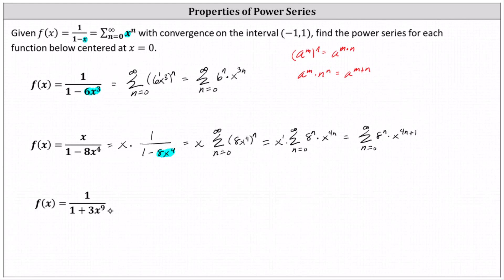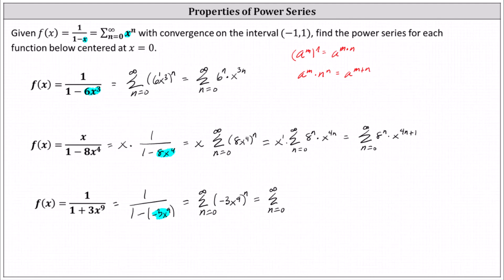For the last example, notice we have a sum in the denominator, not a difference, but we have to have a difference. Therefore we'll write one plus three x to the ninth as one minus negative three x to the ninth. We can write the given function as one divided by the quantity one minus negative three x to the ninth, which means we substitute negative three x to the ninth for x in the given power series. This gives us the sum from n equals zero to infinity of the nth power of negative three x to the ninth, which equals the sum from n equals zero to infinity of negative three to the nth power times x to the power of nine n.